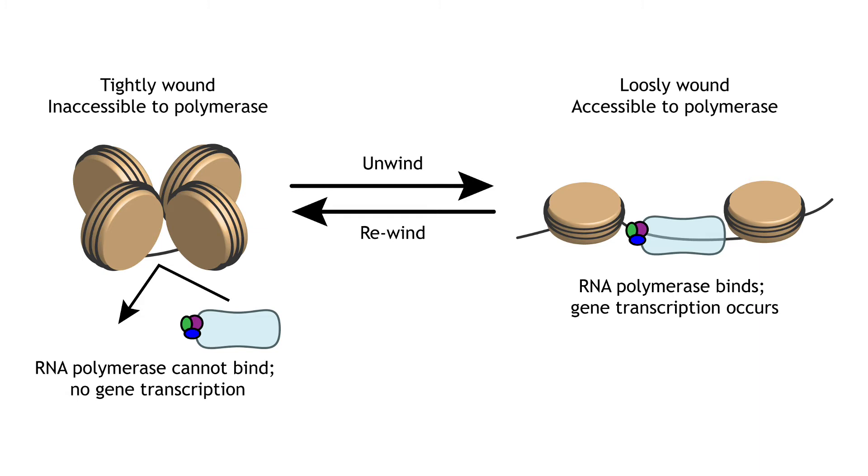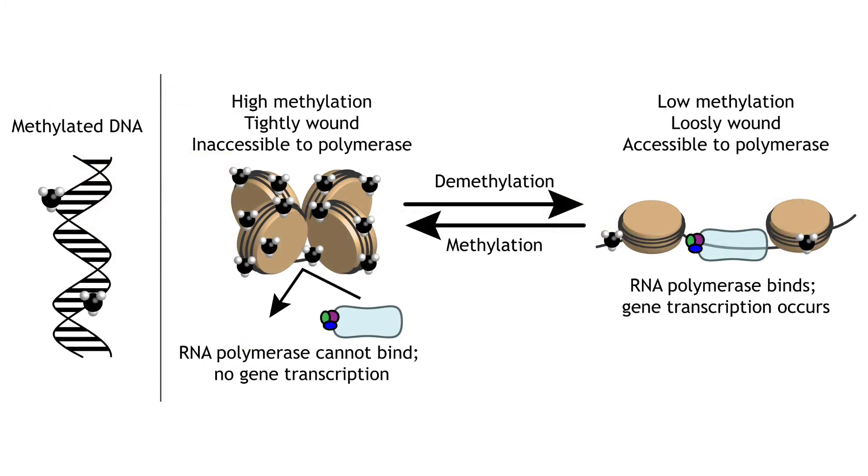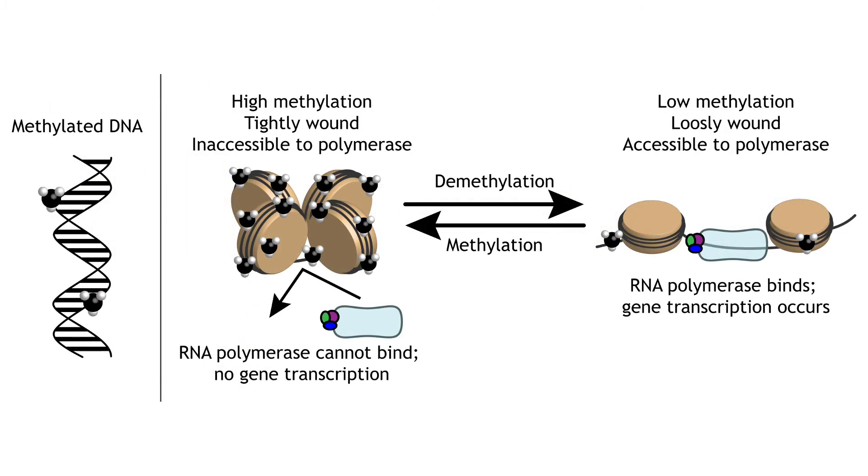If the histones unwind, the DNA then becomes accessible to the transcription proteins. RNA polymerase can bind, and gene transcription can take place. Molecules such as methyl groups can be attached to DNA or on the histones. These epigenetic tags can affect how tightly the DNA is wound around the histones.